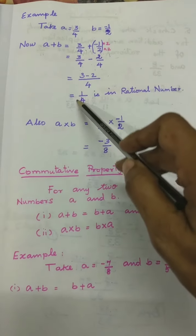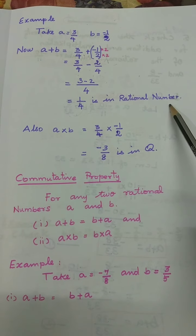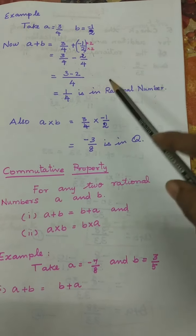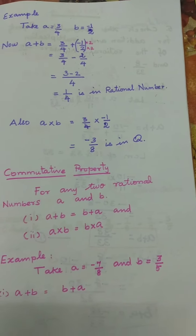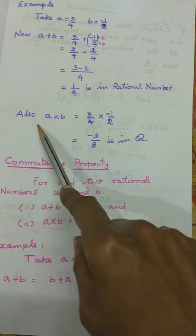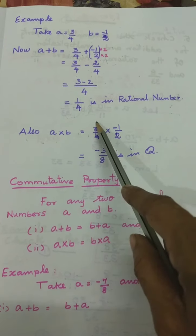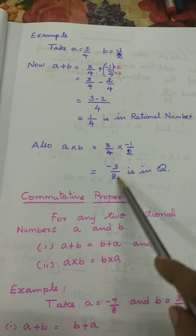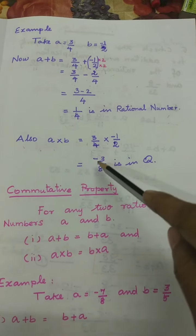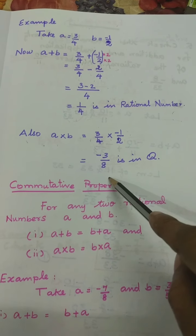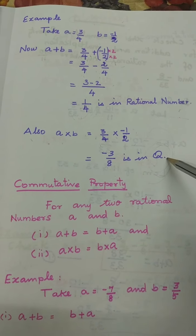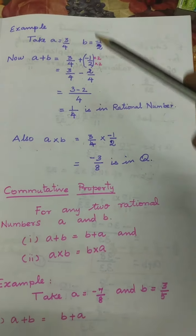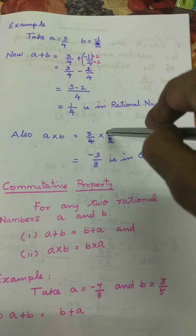A rational number is in the form A by B, where A and B are integers and B is always not equal to zero. Now for multiplication on closure property: A into B equals 3 by 4 into minus 1 by 2. For multiplication, we don't need to find LCM — we simply multiply. So minus 3 by 8 is also a rational number. Rational number is denoted by the letter Q. So in multiplication and addition, the closure property is true.